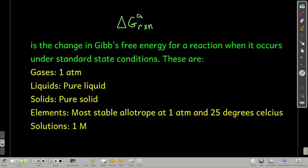Delta G zero of a reaction is the change in Gibbs free energy for a reaction under standard state conditions. If it's a gas, all the gases are at one atmosphere of pressure. If it's a liquid, the liquids are all pure liquids. Solids are pure solids. Elements are in their most stable form at one atmosphere and 25 degrees Celsius, and all solutions are one molar. That's what we mean by delta G zero in standard states.